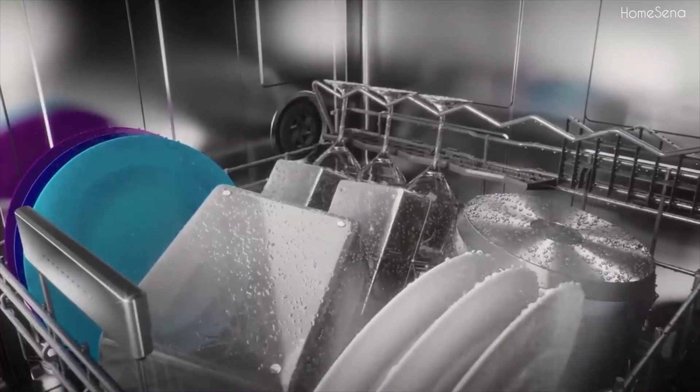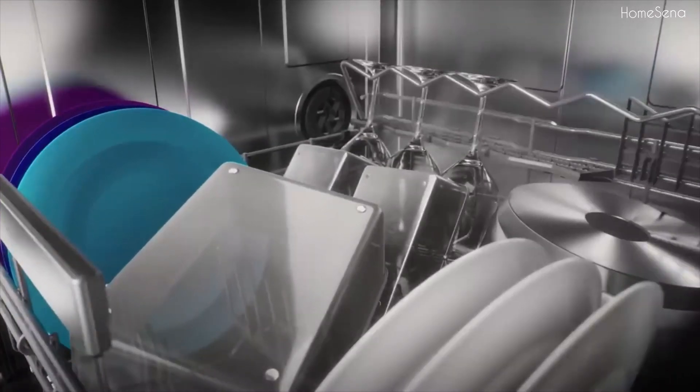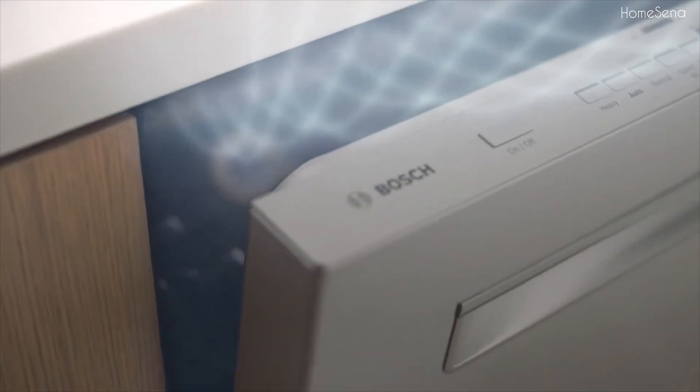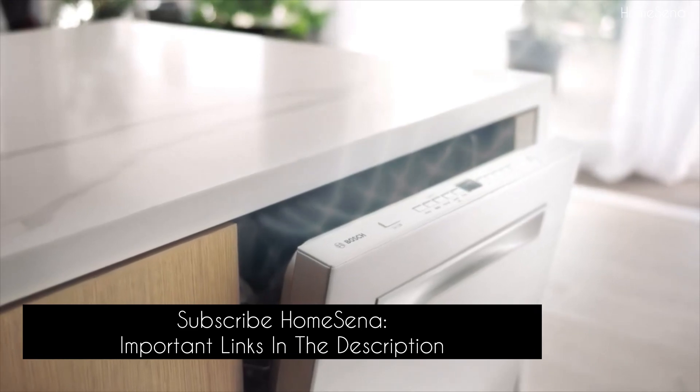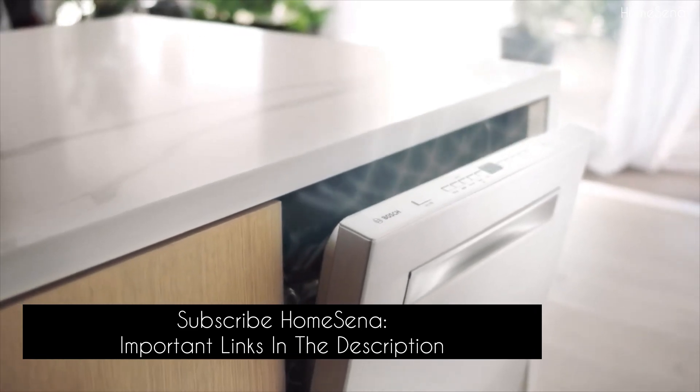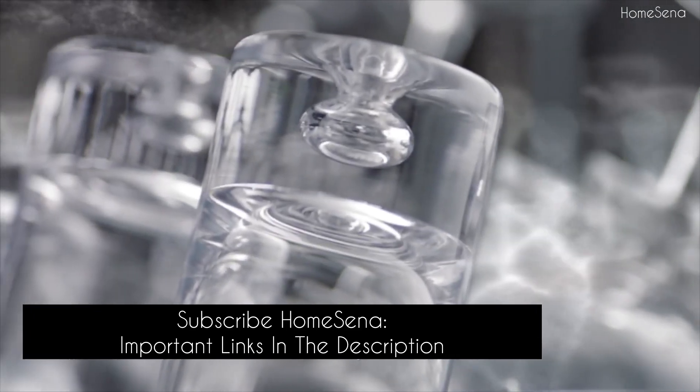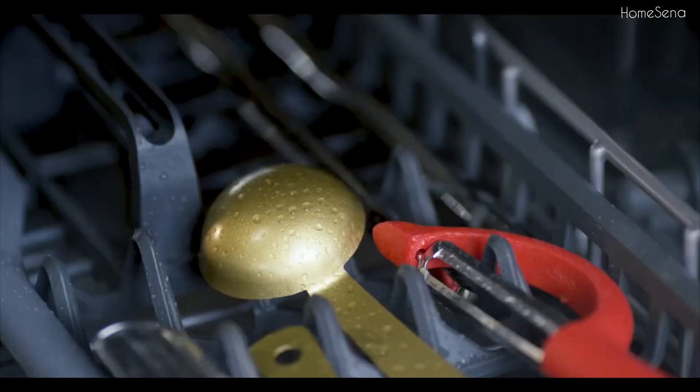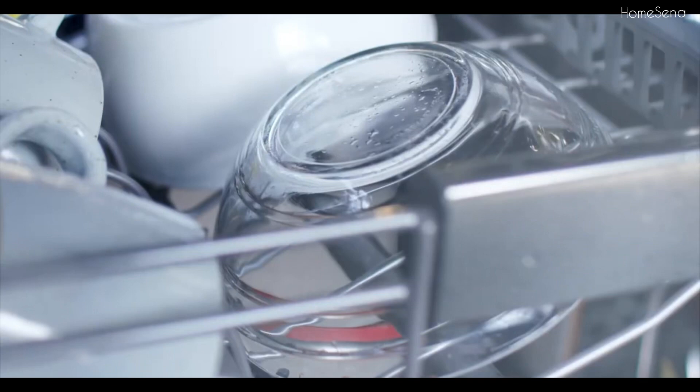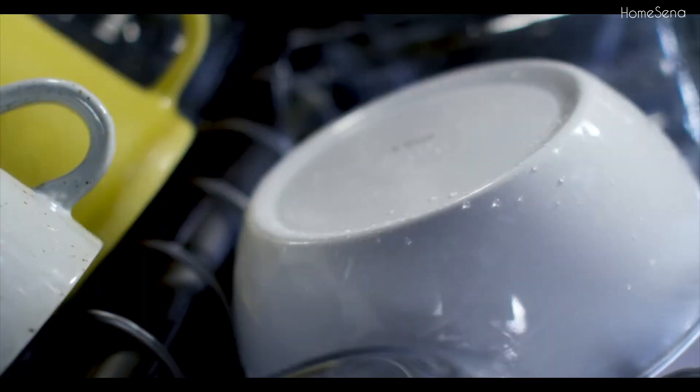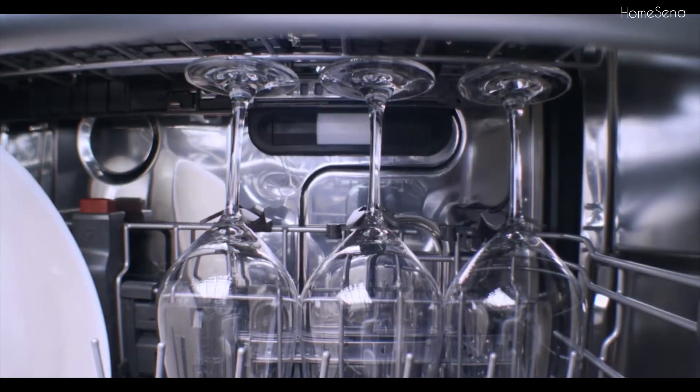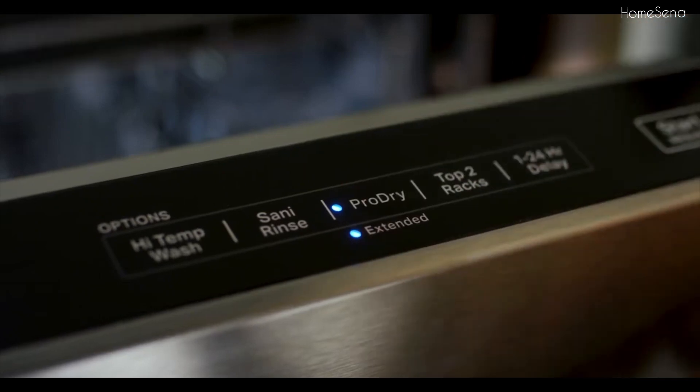Moving on to drying performance, both brands have made significant strides. Bosch, with its auto-air-dry and crystal-dry system, sets the industry standard. The crystal-dry option raises the temperature to 176 degrees F without consuming extra energy. KitchenAid's Pro-Dry system is commendable. KitchenAid has better drying performance than entry-level Bosch dishwashers, but it doesn't quite match up to Bosch's zeolite-based crystal-dry.